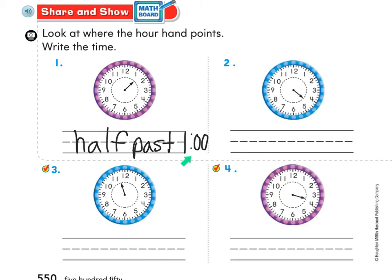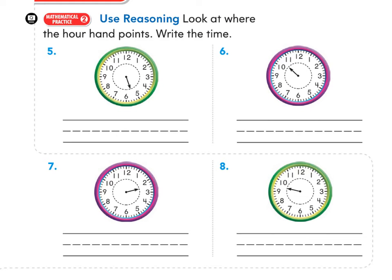Now you try the rest — try number two, three, and four. Then when you're ready, move on to page 551 where we have some continued practice. It says look at where the hour hand points and write the time. Again, all of these hour hands are pointing between two numbers, so you're going to write half past the time. Go ahead and do numbers five, six, seven, and eight.